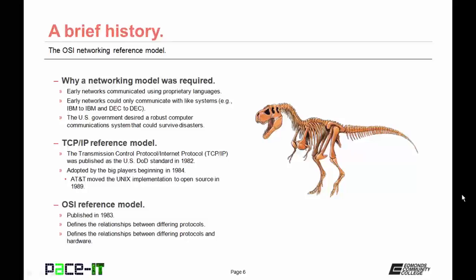The first networking reference model developed was the TCP-IP reference model. The Transmission Control Protocol Internet Protocol reference model was published as the United States Department of Defense standard in 1982. All major systems manufacturers adopted the TCP-IP reference model beginning in 1984. AT&T moved the UNIX implementation of TCP-IP to open source in 1989, further cementing TCP-IP's place in networking.